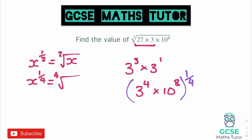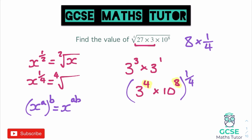When we write it all to the power of a quarter, we use the rule that x to the power of a, all to the power of b, gives x to the power of ab — we just multiply the powers. We've got a 4 and an 8 that both need multiplying by a quarter. Multiplying by a quarter just finds a quarter of that number. For example, 8 multiplied by a quarter gives 8 over 4, which is 2 — a quarter of 8 is 2.